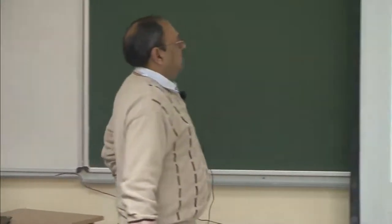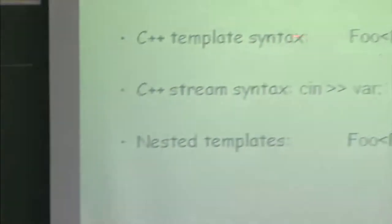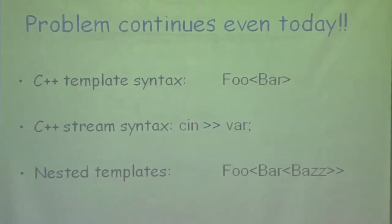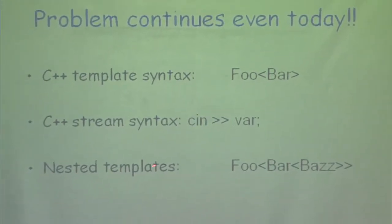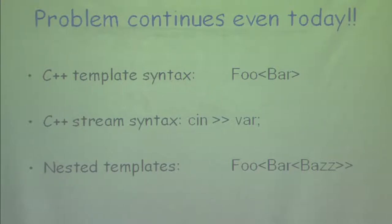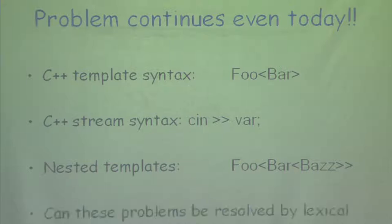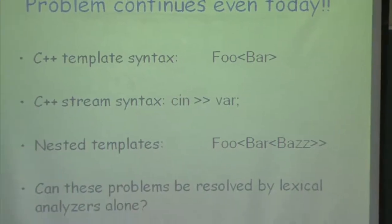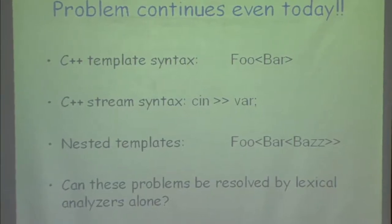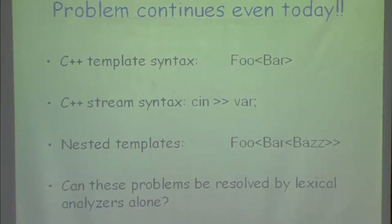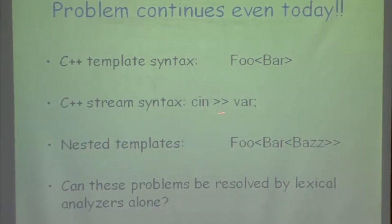Here is an example from C++. We have this syntax for templates and then you have input and output symbols. When I have nested templates, the '>>` symbol appears — is it coming because of nesting, or because of the output stream operator? I do not know. So it is not that we have resolved all these problems. All these problems I have described cannot be resolved just by looking at the lexical analyzer. I need to know something about the tokens in context — that means I have to shift this problem to the syntax analyzer.